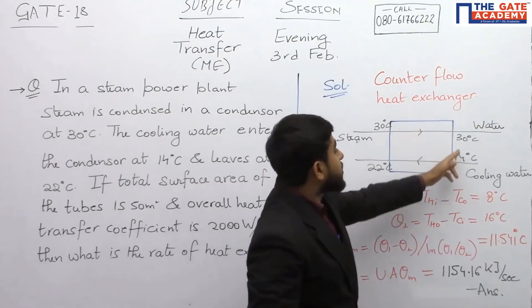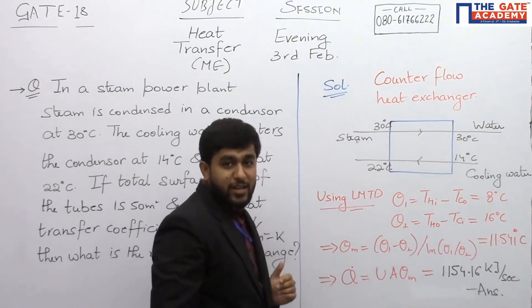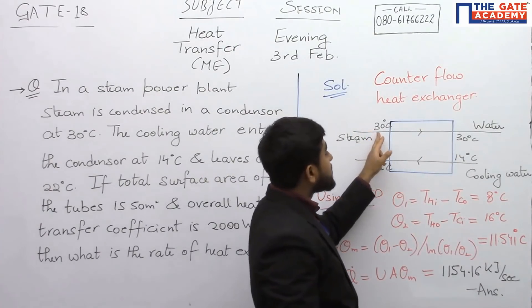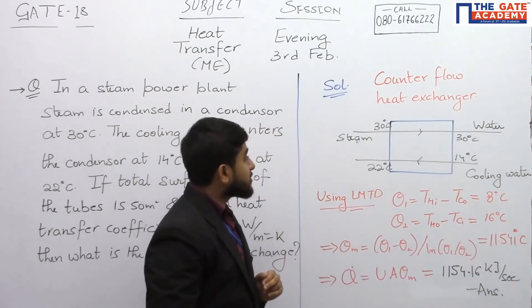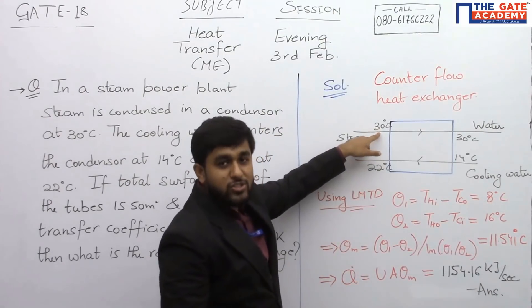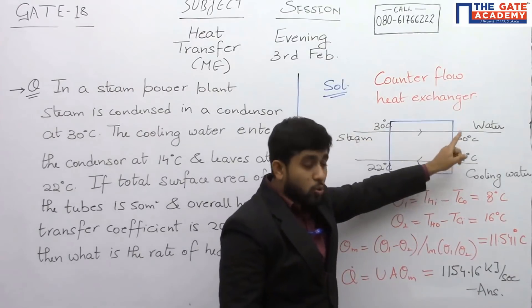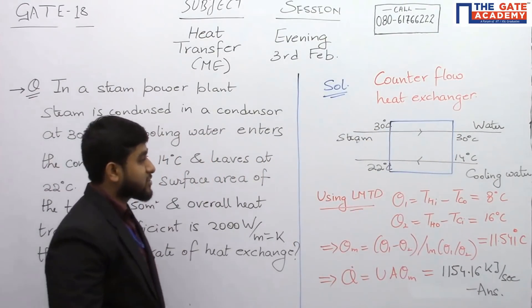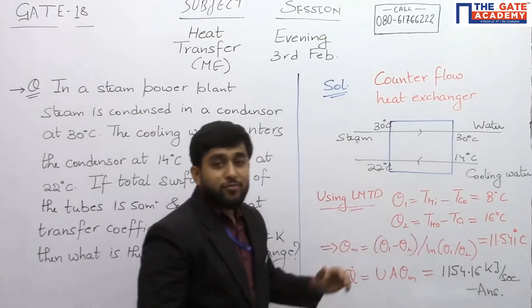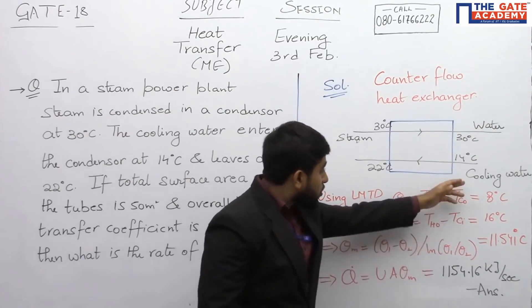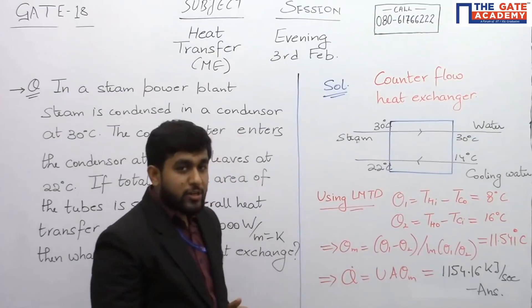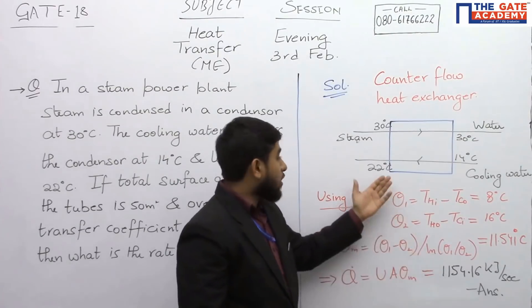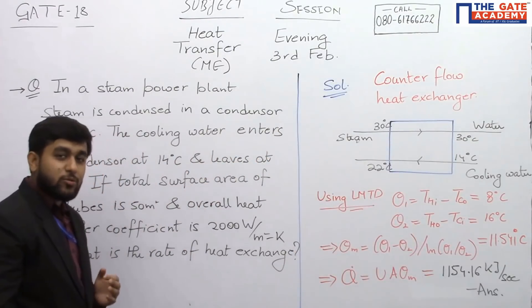What we have is we have a counter flow heat exchanger in which the steam is getting condensed and the temperature of the steam is 30 degree Celsius. So you can simply say Th_i, which is the inlet temperature of hot fluid, and Th_o, the outlet temperature of hot fluid, both are 30 degree Celsius. Now the cooling water will flow in opposite direction, so cooling water inlet temperature is 40 degree Celsius, that is Tc_i, and outlet temperature Tc_o is equal to 22 degrees Celsius.